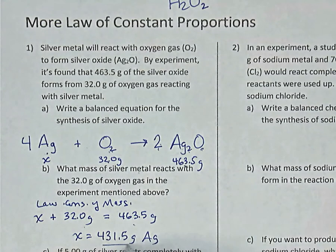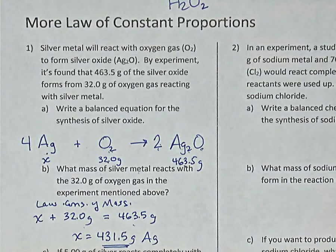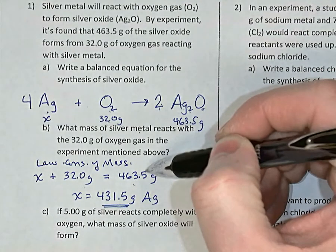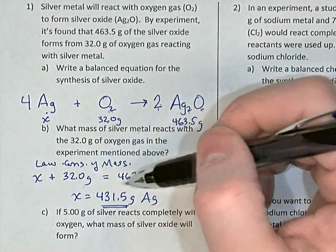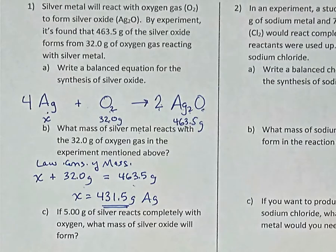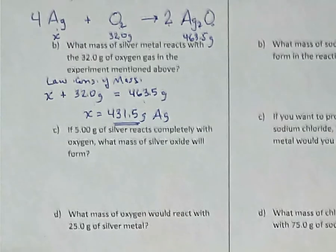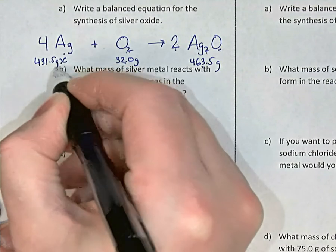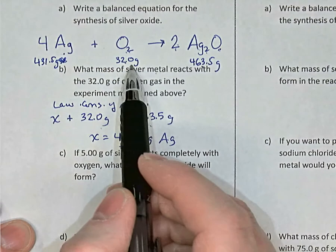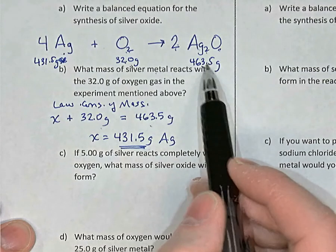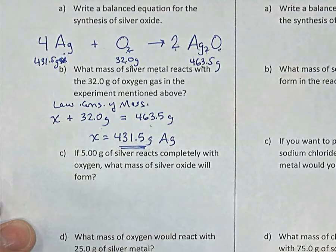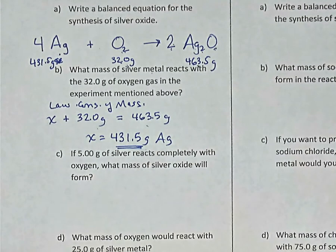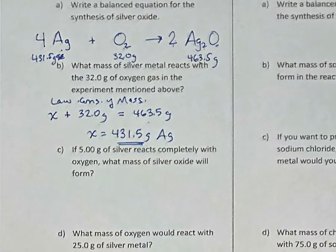When adding or subtracting measured quantities, round based on the number of decimal places. Since 463.5 has one decimal place and 32 has one decimal place, we keep one decimal place: 431.5. Now we have a complete recipe: 431.5 grams of silver reacts with 32 grams of oxygen to make 463.5 grams of silver oxide. Those masses give us mass ratios — just like in the electrolysis of water experiment — and we can use them to answer further questions.